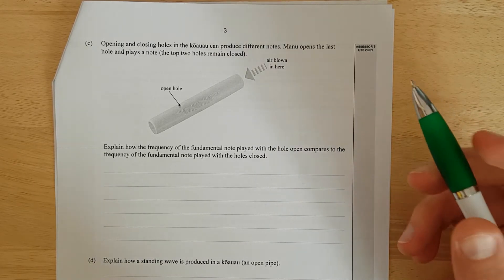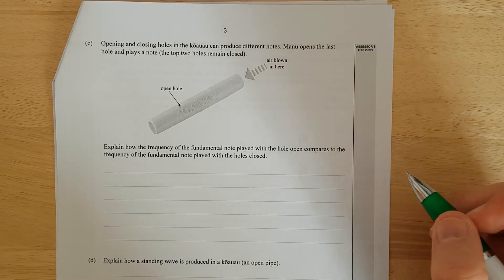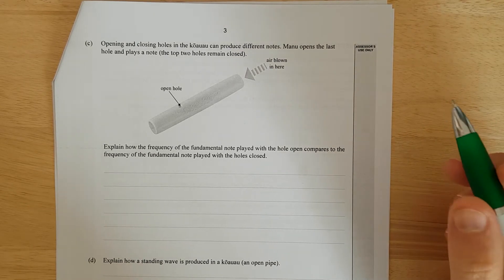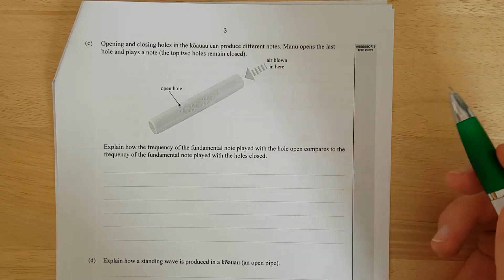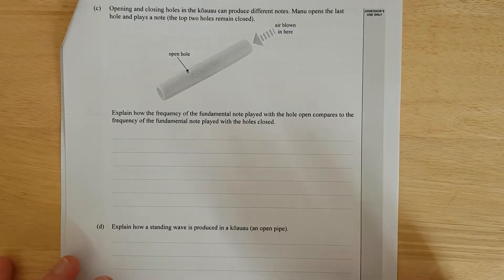So essentially, the effective length of the pipe has been shortened, which will mean the fundamental wavelength that can fit inside the little pipe reduces, which then, because the speed of sound hasn't changed, if the wavelength reduces, the frequency of the fundamental will increase compared to the other one. Right, so I'll pause it and write it up coherently-ish.